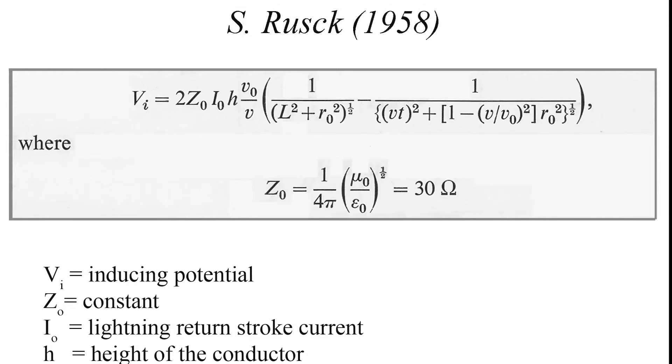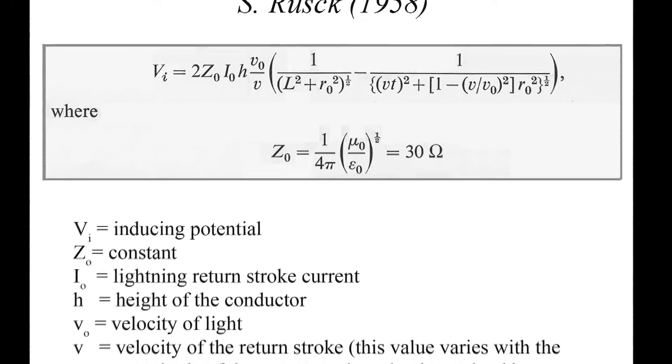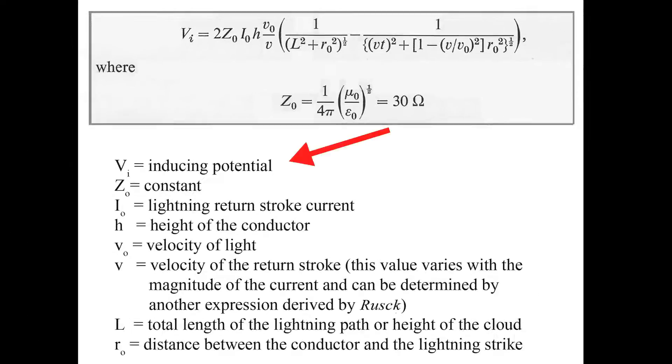The phenomenon is quite well understood, and 1958 saw the introduction of the Rusk equation, which is still widely used today and allows for the calculation of the inducing potential as a function of the return stroke current, the height of the conductor, and the distance between the conductor and the lightning strike.